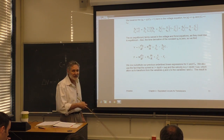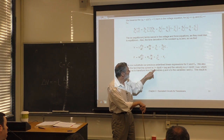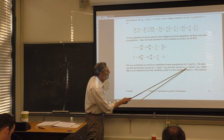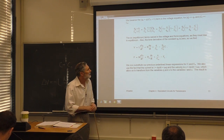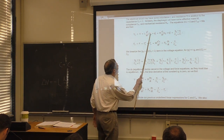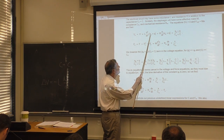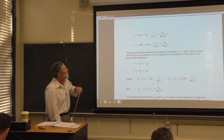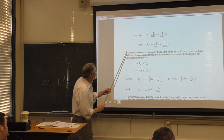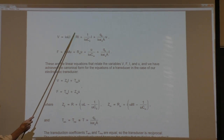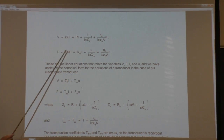We go to current as the canonical variable, replacing q with I/(iω) and x with u/(iω). Some terms vanish because the time derivative of a DC (equilibrium) quantity is zero. After simplification we arrive at the canonical equations.